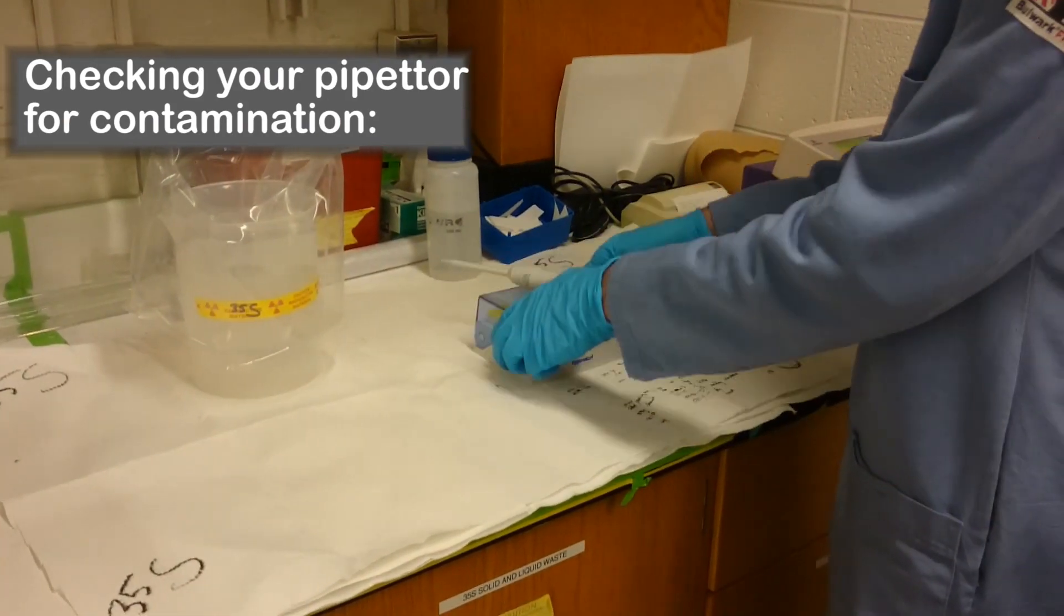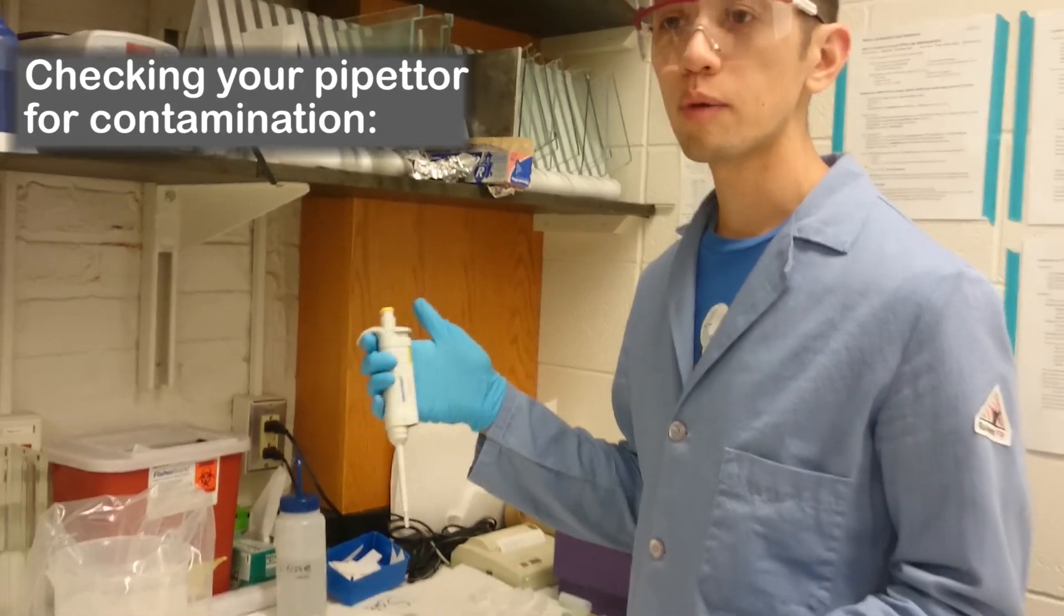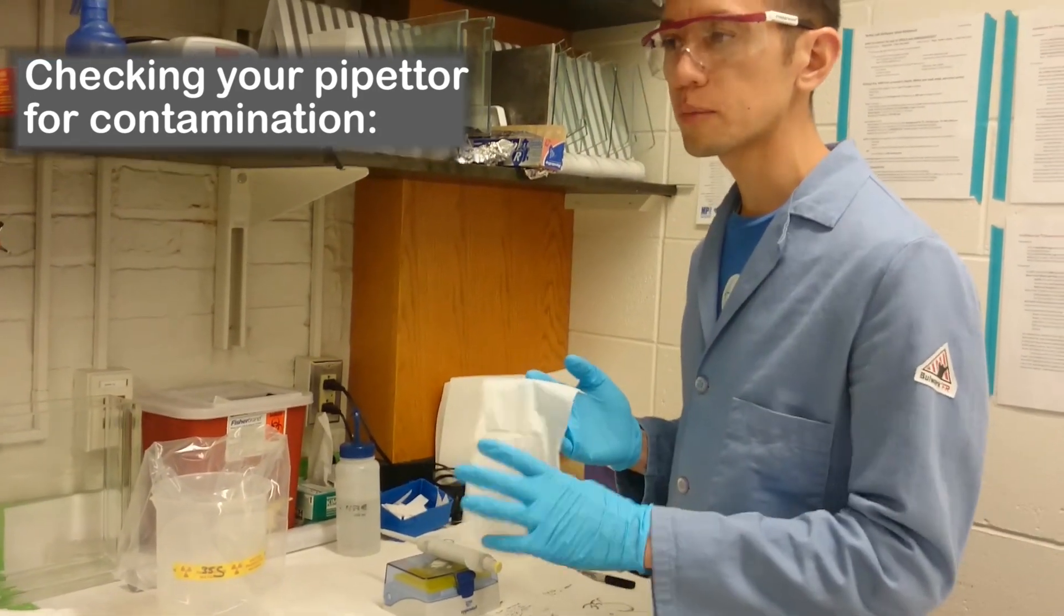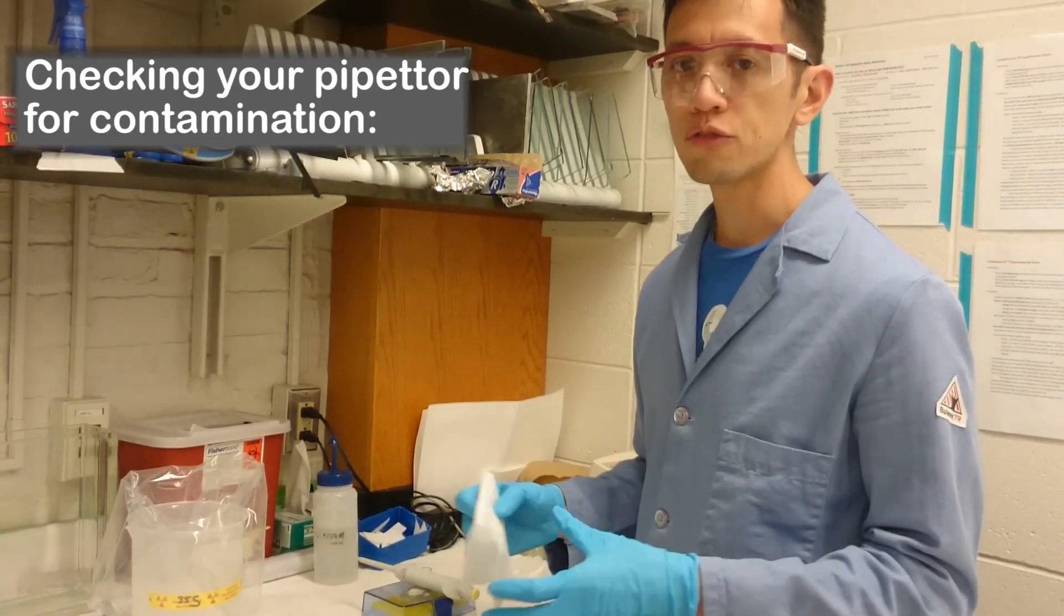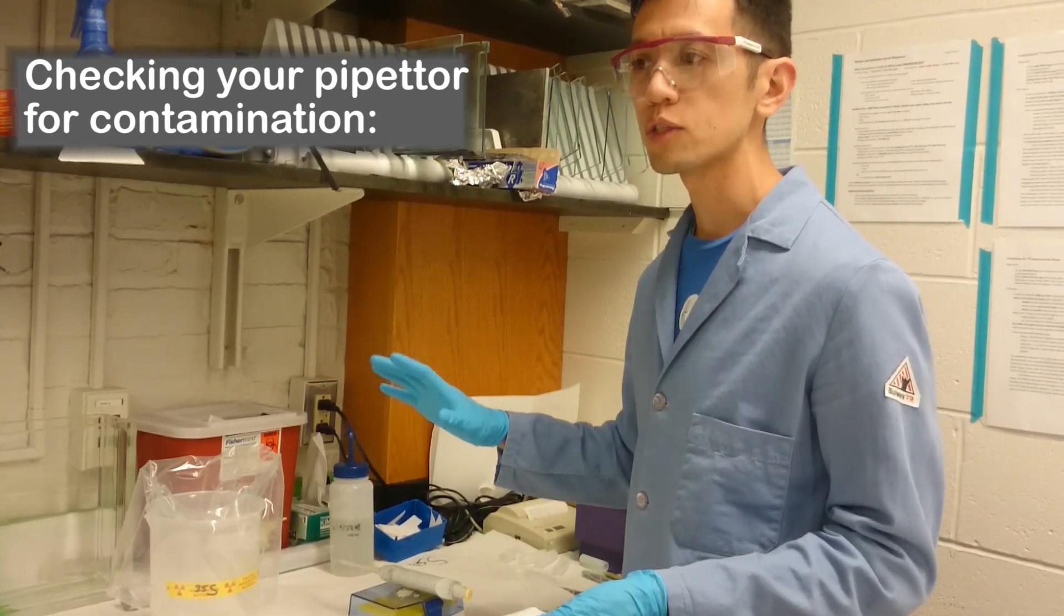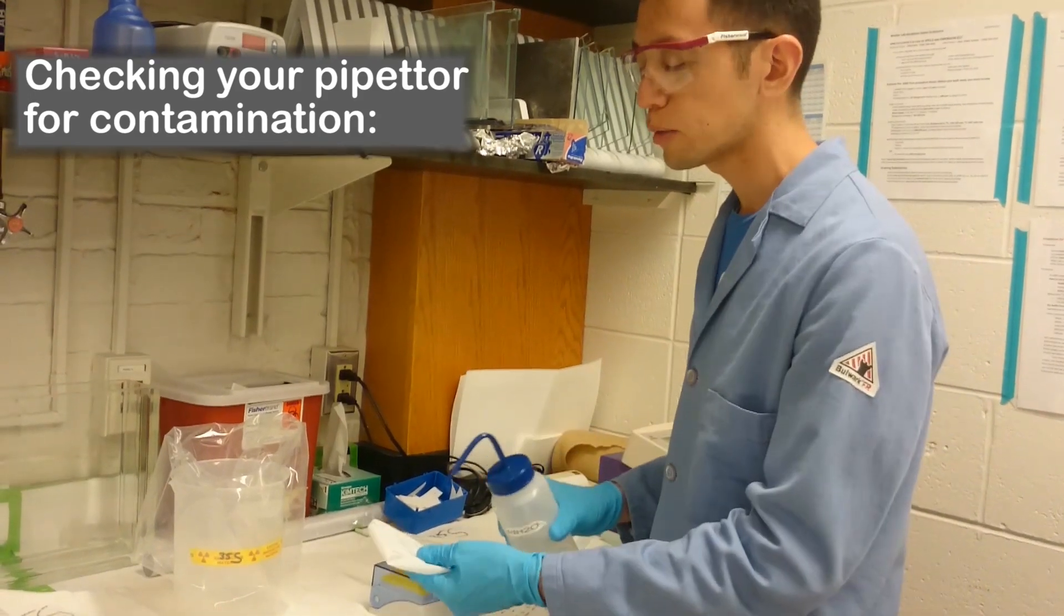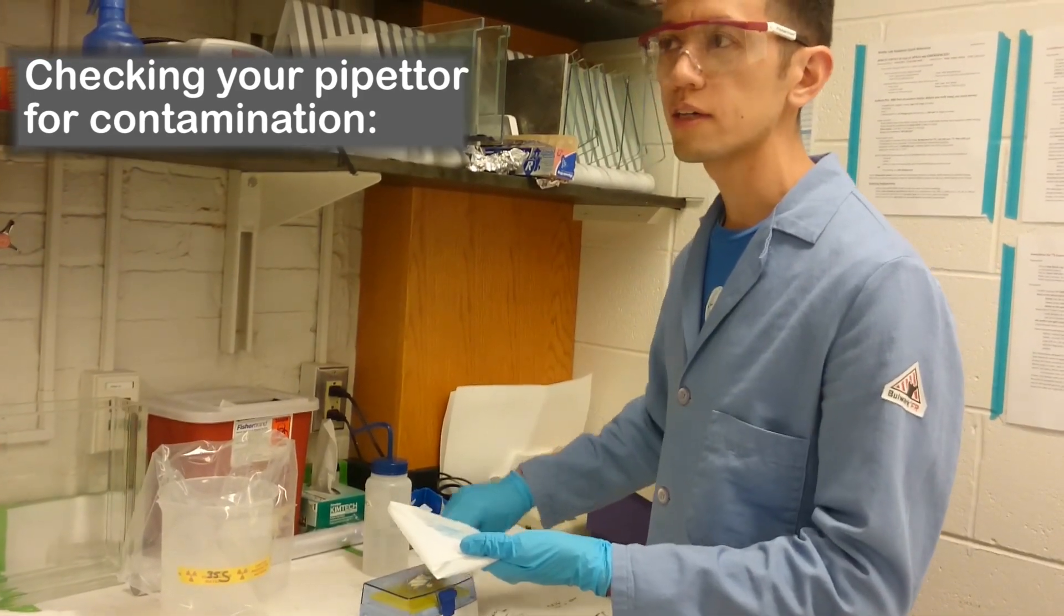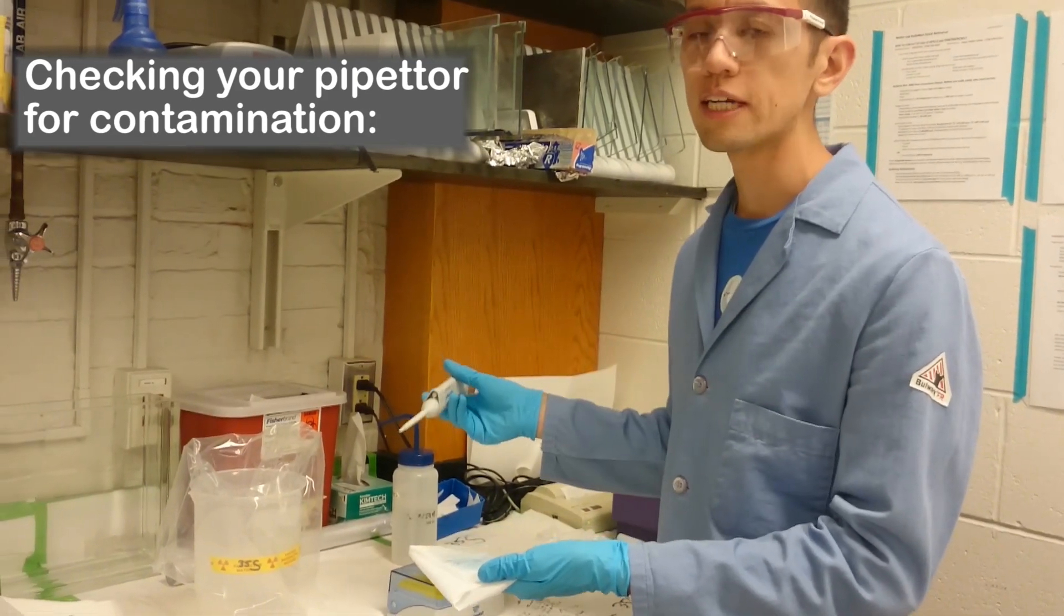Let's say I've done an experiment. I want to show you now how to clean a pipettor. Usually when you have small contamination, a Kim Wipe with water is usually enough to clean it off. Static electricity can also be a problem when you're counting scintillation vials, so typically I preemptively clean things and that will help to reduce the need to re-swipe things.